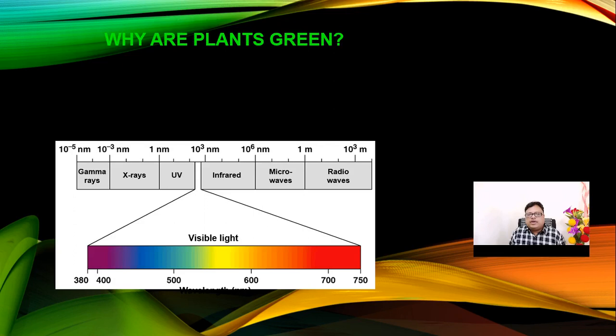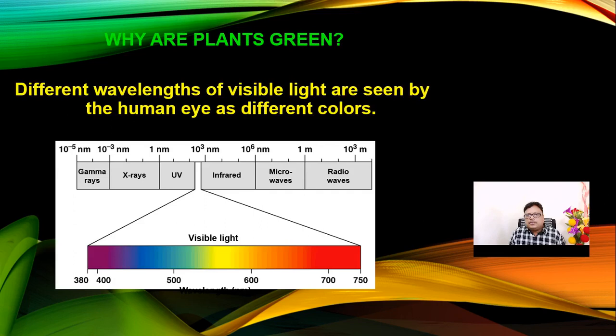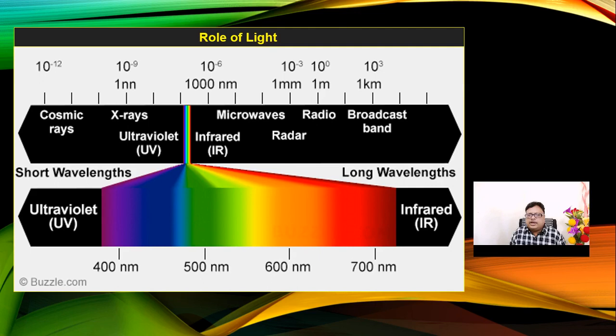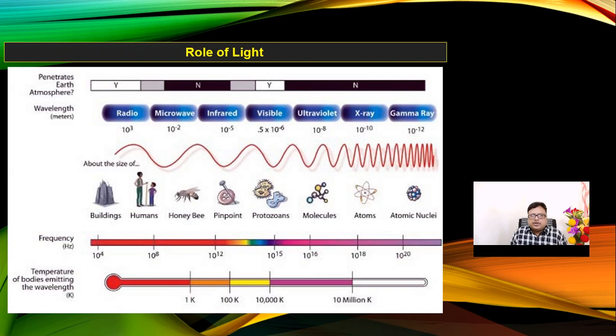Why do plants look green? When sun radiation reaches the earth, it gives different types of radiations — gamma rays, X-rays, radiowaves — but only in between ultraviolet and infrared do we get visible light. In that visible light, wavelengths from 400 to 700 angstroms give us different colors — seven colors of light. In between them, two colors are very important — blue and red — which actively take part in photosynthetic reactions.